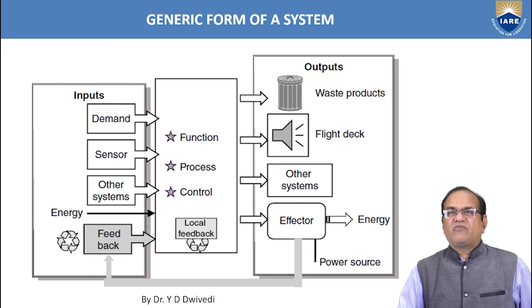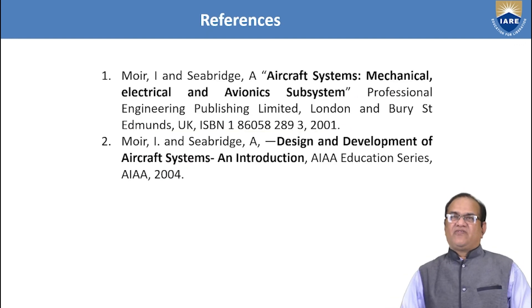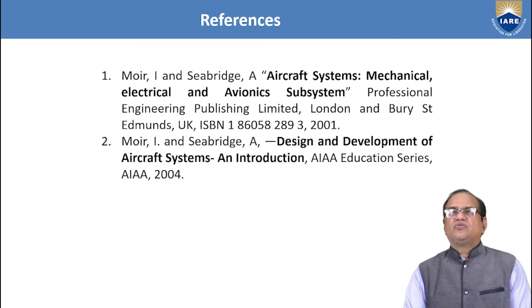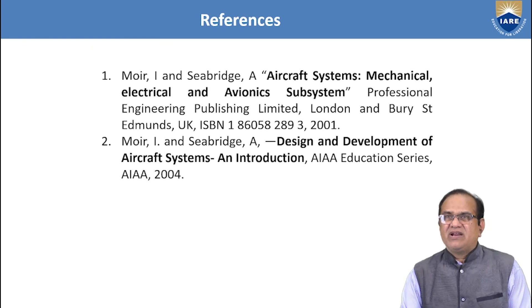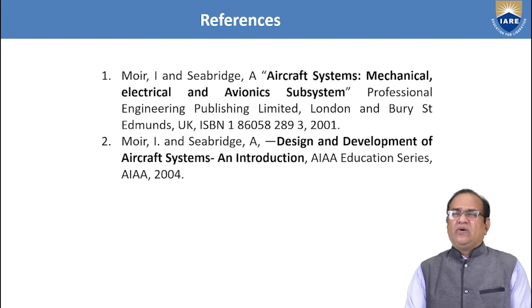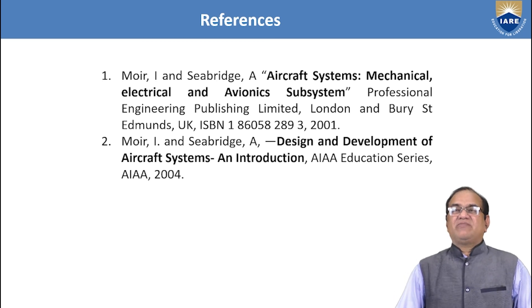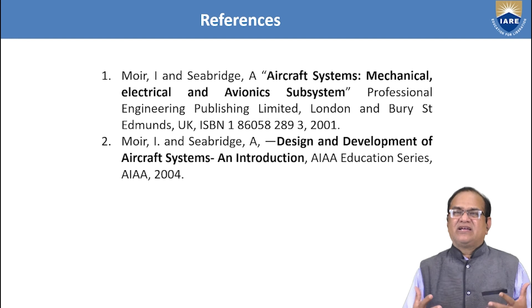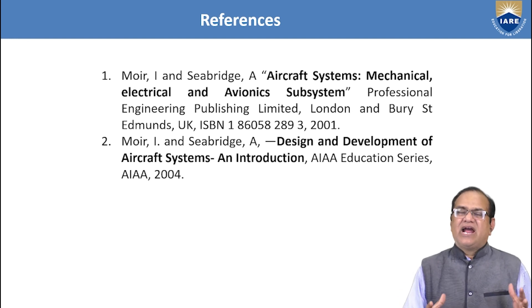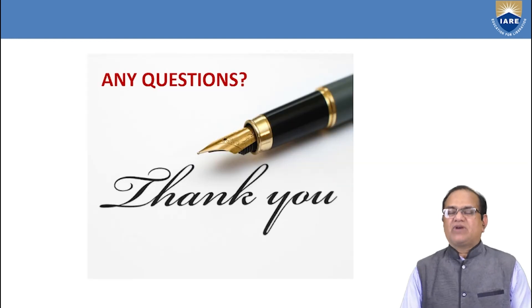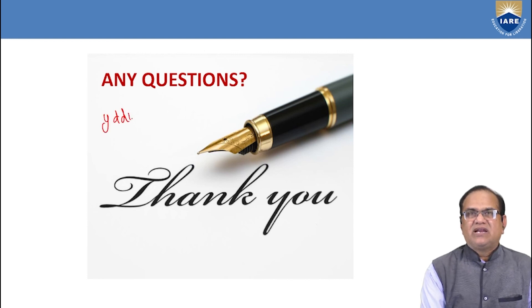The references for this course are: Moir I. and Seabridge, 'Aircraft Systems: Mechanical, Electrical and Avionics Systems,' Professional Engineering Publishing Limited, London; and Moir I. and Seabridge, 'Design and Development of Aircraft Systems: An Introduction,' AIAA Education Series. These are the two books referred to in this course — please try to get them from the library or online.